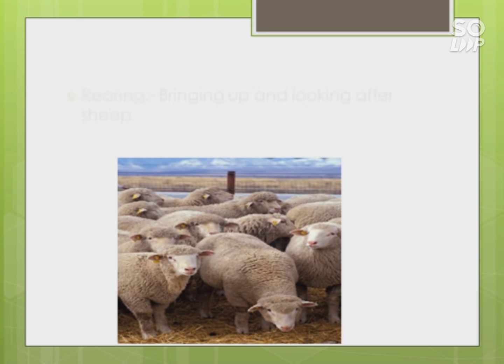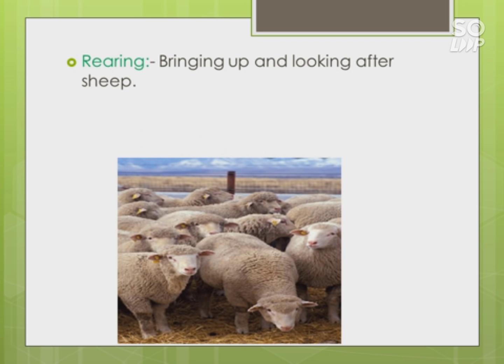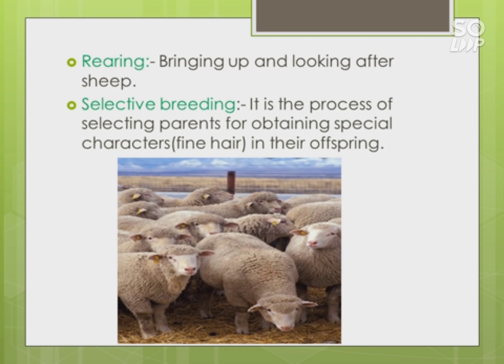The first step is rearing - it means bringing up and looking after sheep. The second step is selective breeding, which is the process of selecting parents for obtaining special characters like fine hair in their offspring. To get good quality fiber or yarn from sheep, you need to identify the right sheep that gives fine hair. That is known as selective breeding - breeding between two such sheep to get a new sheep that will provide fine hair.